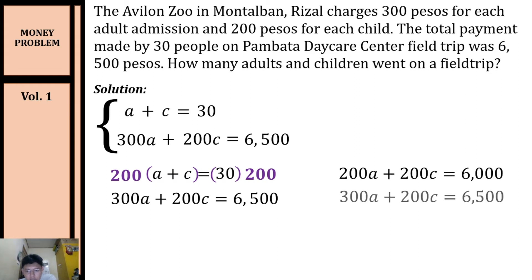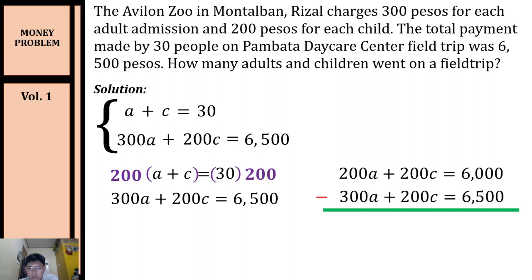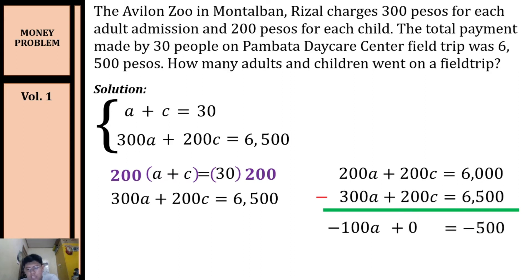Copying our second equation: 300a + 200c = 6500. To eliminate variable c, we subtract the equations. 200a minus 300a equals negative 100a. 200c minus 200c equals zero. 6000 minus 6500 equals negative 500. So we have: negative 100a = negative 500.